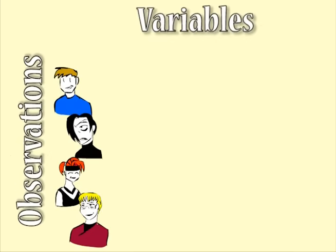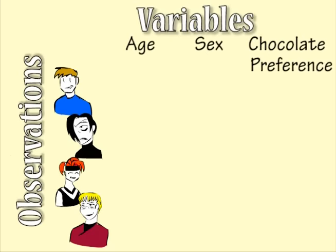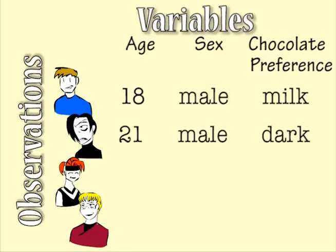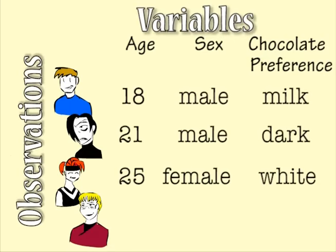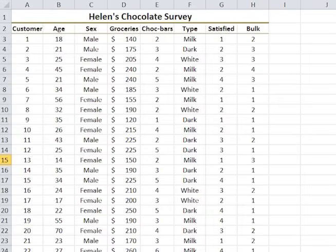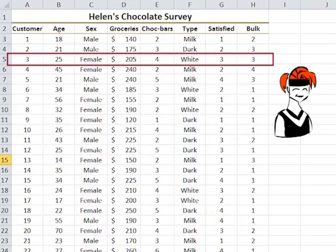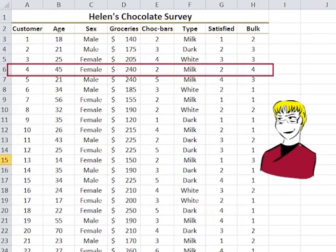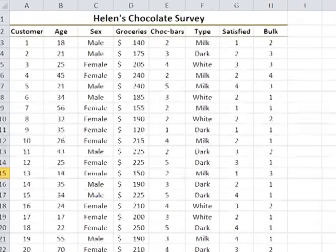Variables record the measurements we are interested in. Age, sex, and chocolate preference can all be stored as variables. For each observation, we record a score or value for each of the variables. When we store this data in a spreadsheet or a database, each row corresponds to a single observation and each column is a variable.